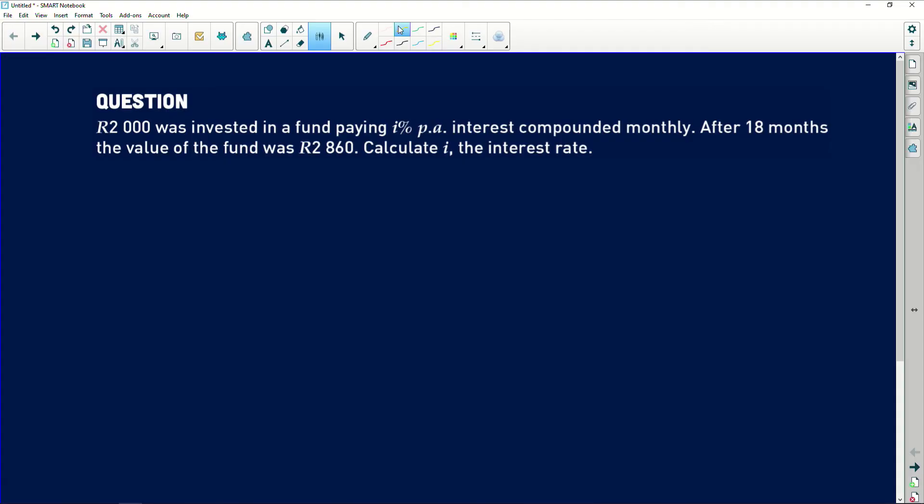So the 2000 Rand was invested in a fund paying I percent per annum, that's the interest rate we need to find. I percent per annum interest compounded monthly. Also very important.